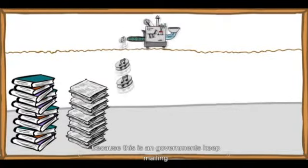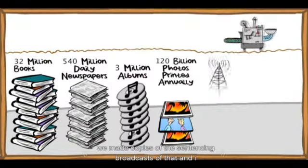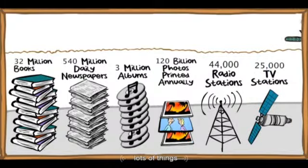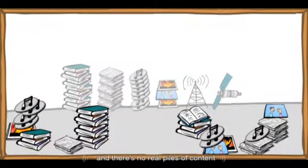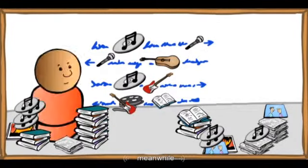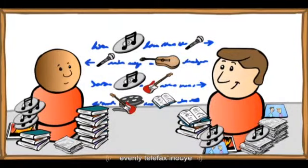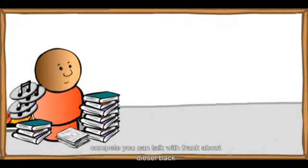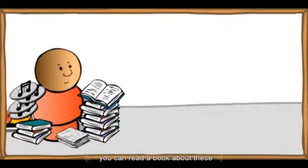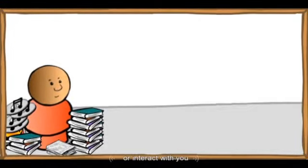In the previous couple of hundred years, we got good at duplicating content — well, big businesses and governments mainly. We made copies of books, magazines, and broadcasts. Then we started buying records, tapes, and discs and built our own piles of content. Meanwhile, conversations stayed one-to-one, even with telephones. In a way, content and conversation compete. You can talk with Frank about this or that, or you can read a book or watch a show — but they don't relate to you or interact with you.